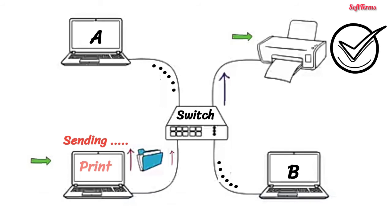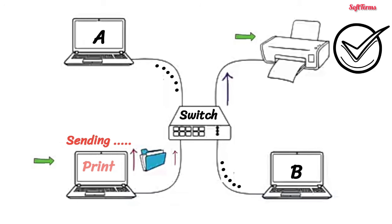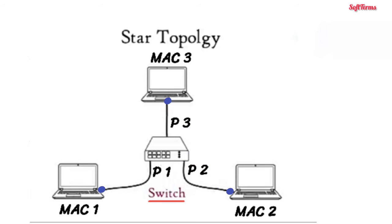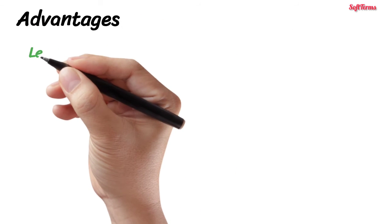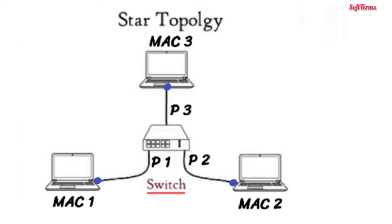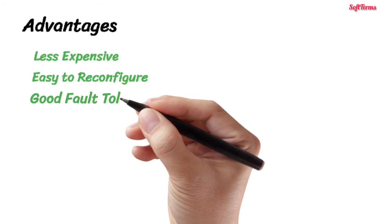Switched connections allow simultaneous communication. On the other hand, hubs allow only one device to communicate at a time. Please note that if the destination MAC address in the frame is an Ethernet broadcast address, then the switch also broadcasts the received frame. In star topology, only one input-output port and cable is needed for each device to connect to several devices. It is also easy to reconfigure because we can add or remove devices simply by connecting or disconnecting one cable. If one cable connected to the central device fails, only one communication link goes down and not the entire network. So star topology has good fault tolerance.